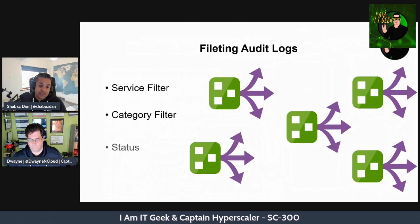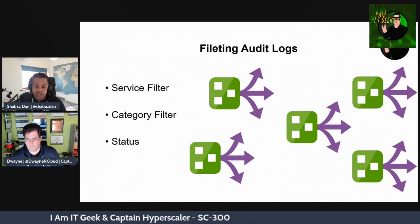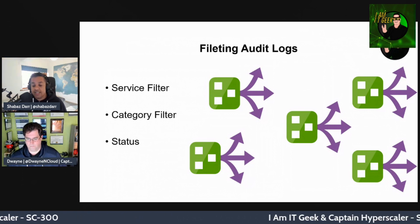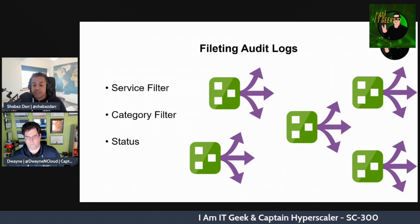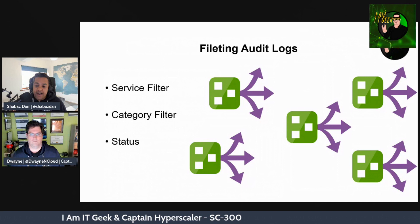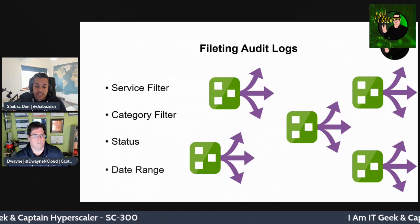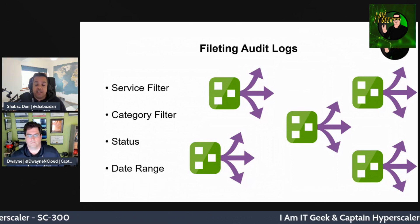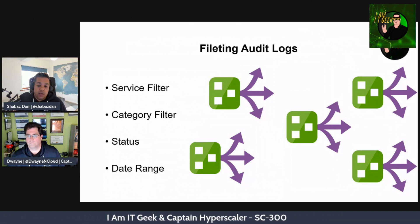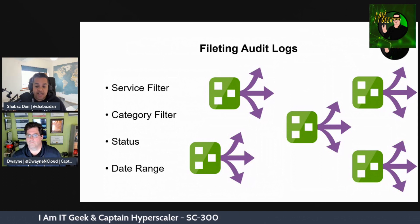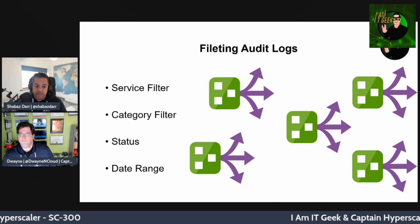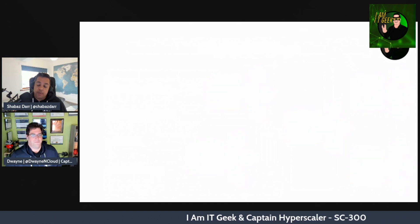The status filter allows you to filter based on the status of an audit operation — values are All, Success, or Failure. The date range filter enables you to define a time frame for returned data; possible values are 7 days, 24 hours, or a custom range.